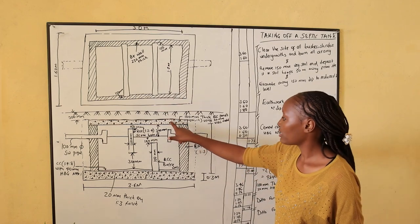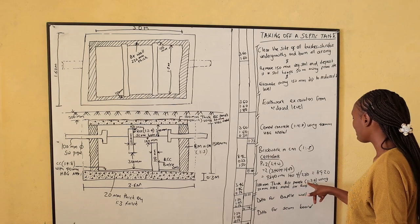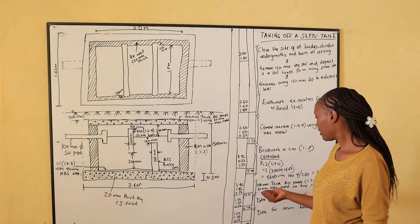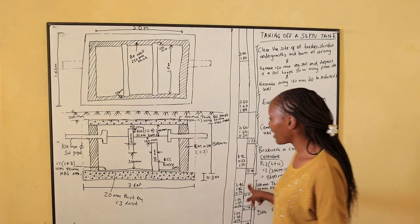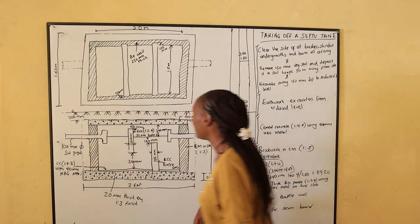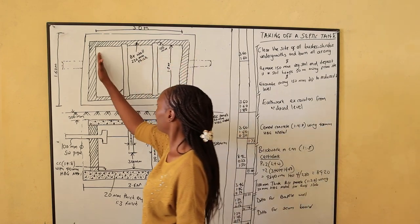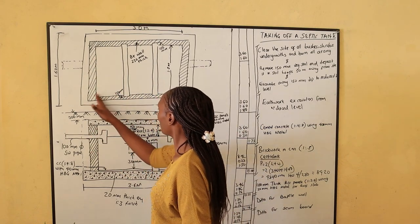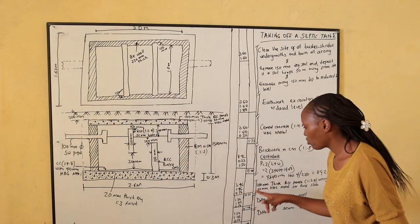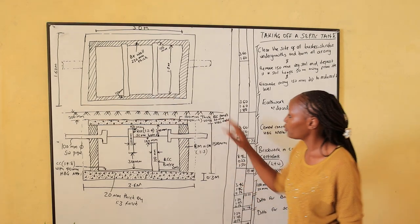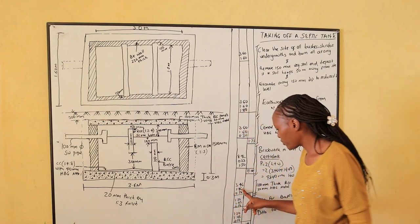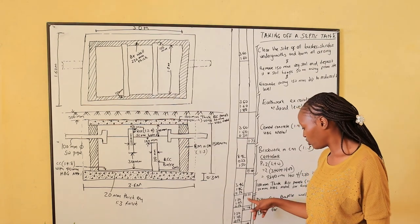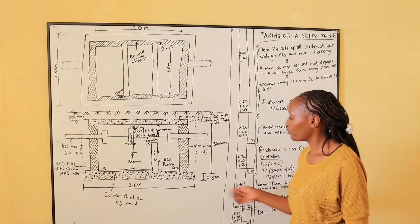Let's go to the RCC panels on the roof slab. It's 100mm thick RCC panels, ratio 1:2:4 using 20mm HPG metal for the roof slab. The length of the roof slab is from here to here — we take 3 meters inside plus the walls: 3m plus 230 plus 230 = 3.46m. The width is 1.46m because it's 1m plus 230 plus 230. The thickness is 0.10m. So the volume of concrete shall be 0.51 cubic meters. The same panels are used for the scum board and buffer wall.